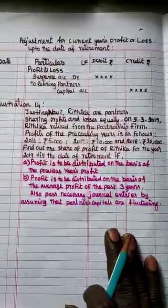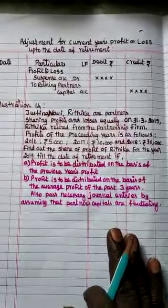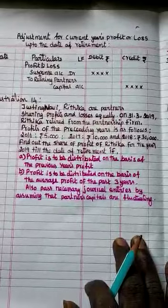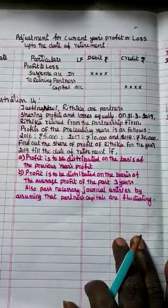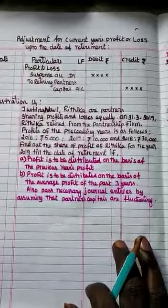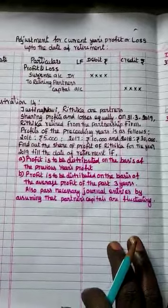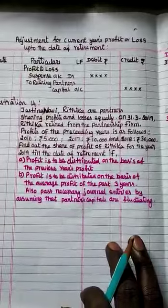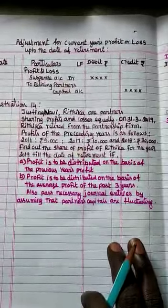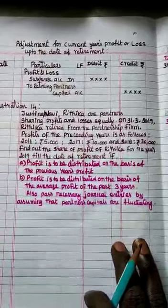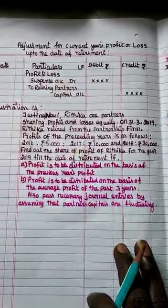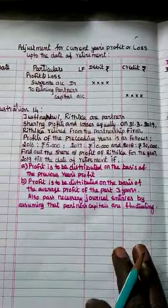Suppose the partner is going to retire at the academic year end — no problem. The profit and loss account will be transferred automatically, and the profit of the year will also be distributed to the retiring partner automatically. But if the partner retires in between the academic year, we can't prepare the profit and loss account during the middle of the academic year.